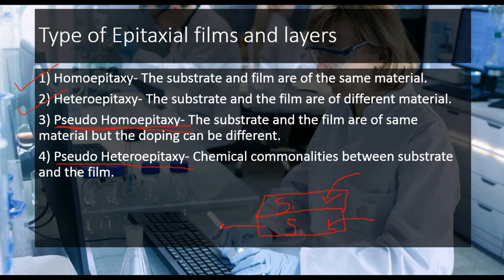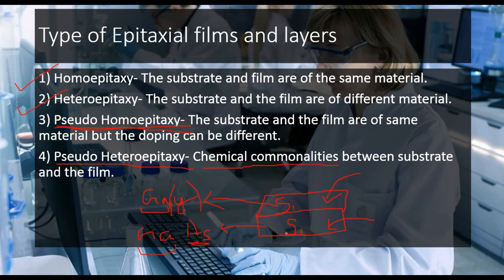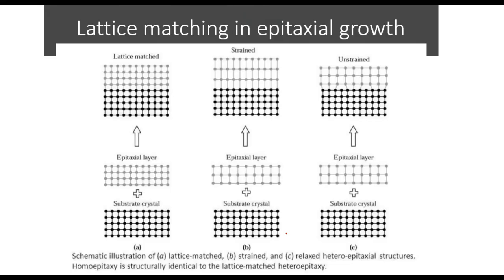Pseudo-heteroepitaxy means there are chemical commonalities between the substrate and the film. For example, if the substrate is gallium arsenide, the film could be gallium combined with a different element — so gallium is common between substrate and film. Chemical commonalities means something is shared between substrate and film.